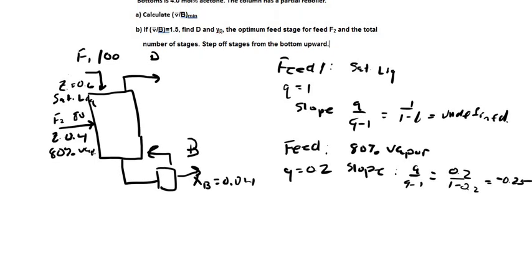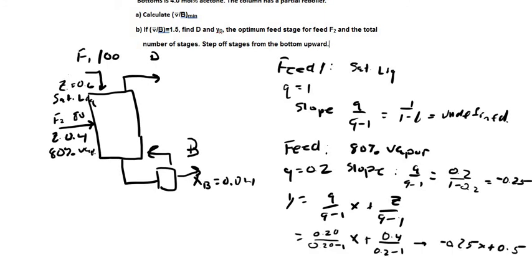The equation for this feed line will be given as Y equals Q over Q minus 1 times X plus your feed over Q minus 1. After these feed equations are found we can move to the graph.